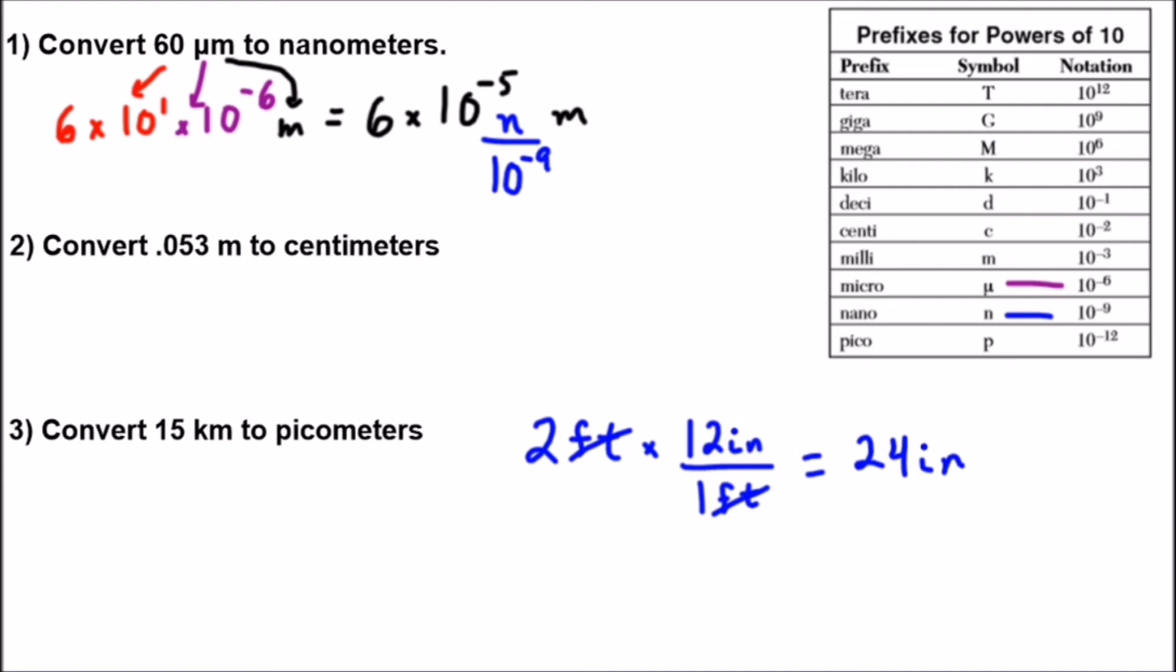So then the last thing we want to do is just simplify the numerical parts. And I have 6 times 10 to the negative 5 divided by 10 to the negative 9 is 10 to the 4th power. You can just do negative 5 minus negative 9. So I have 10 to the 4th and now I can just write nanometers. And this is the solution for the first question.